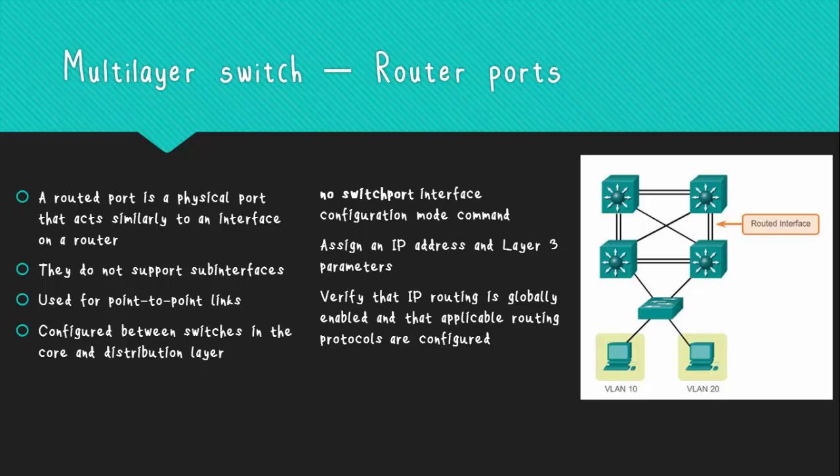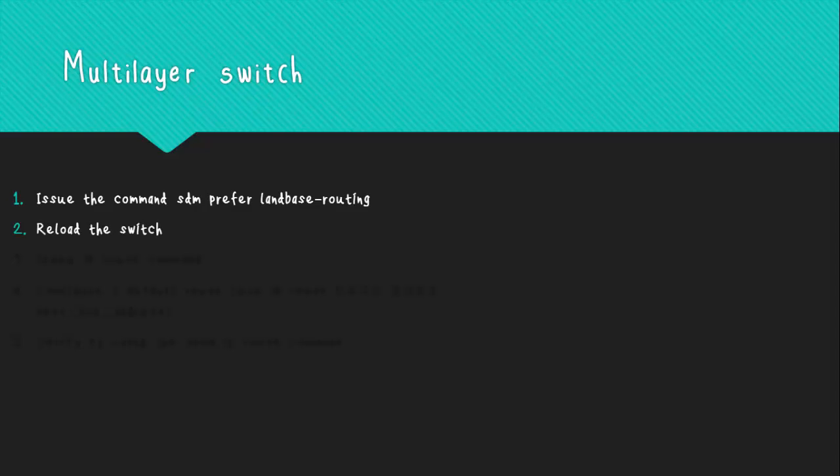The advantage of a multilayer switch is that it can have both SVIs and routed ports in a single switch, and it has faster routing because multilayer switches forward Layer 2 or Layer 3 traffic in hardware. The only drawback is that a multilayer switch costs much more than a simple switch. To configure a static route on a multilayer switch, the Cisco Switch Database Management (SDM) provides multiple templates. The first step is to issue the command 'sdm prefer lanbase-routing' in global configuration mode, then reload the switch.